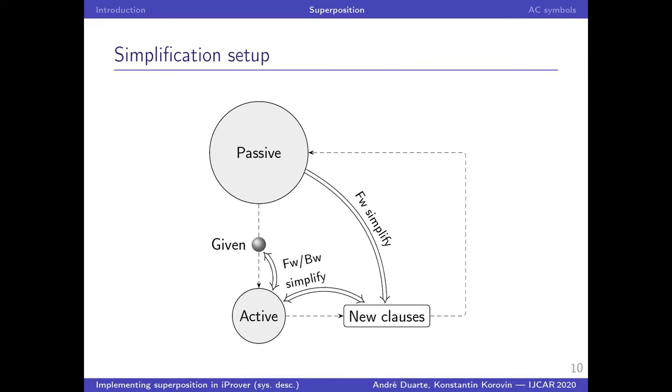Well, for example, we may try a sort of compromise. Clauses in passive can simplify only forwards, for example. So we simplify new clauses with passive, but not vice versa. While with active, we simplify in both directions, both forwards and backwards.